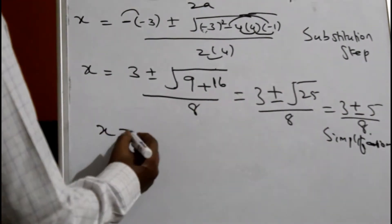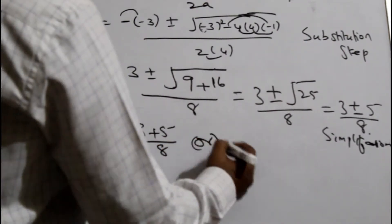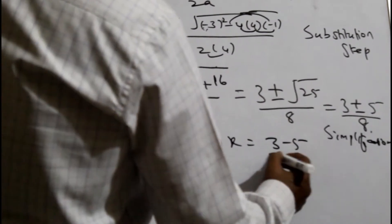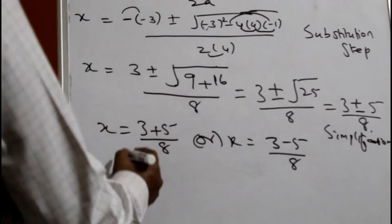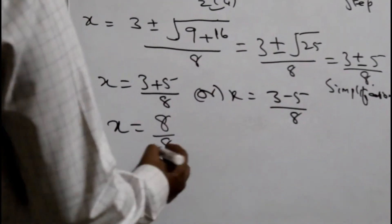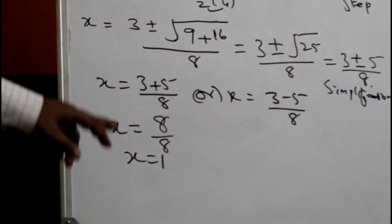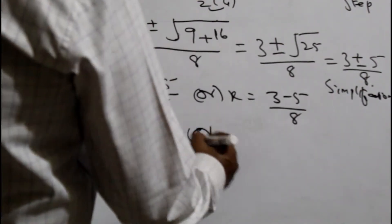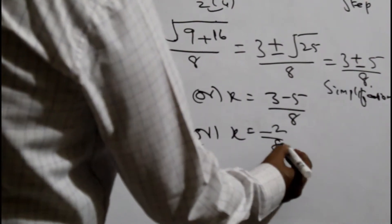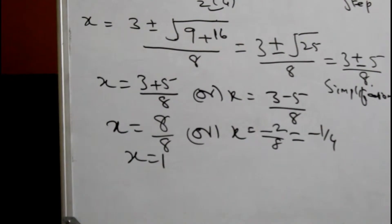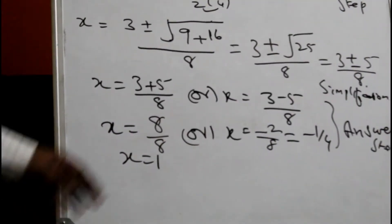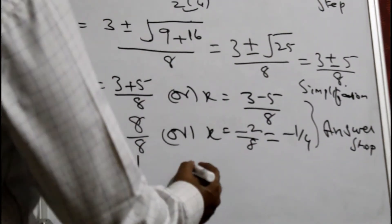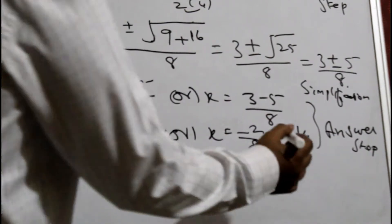So x equals 3 plus 5 by 8, or x equals 3 minus 5 by 8. Three plus 5 is 8 by 8, so x equals 1. And 3 minus 5 is minus 2 by 8, which is minus 1 by 4. This is called the answer step. So the solution set is {1, minus 1 by 4}. These are called values or roots.